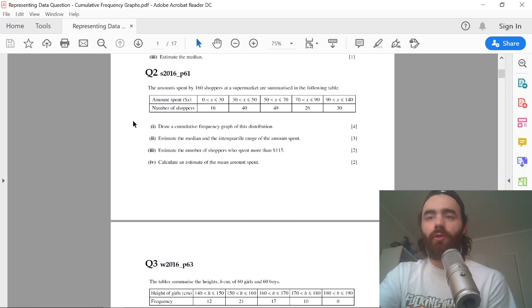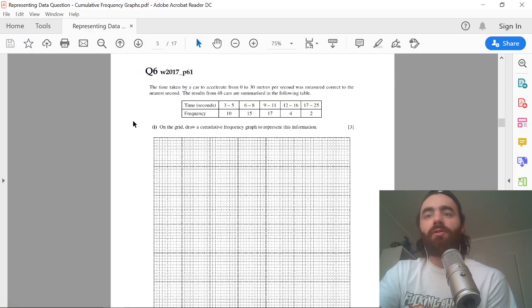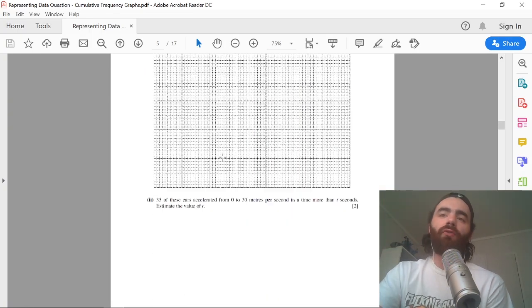What they usually like to do is they give you a table of frequencies or cumulative frequencies, they like you to plot the cumulative frequency graph, and then find certain values from that graph.